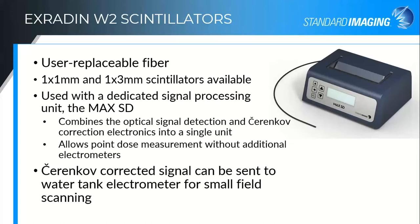The one by three also gives you three times the signal. So if you're scanning in slightly larger small fields where you may not need one millimeter length resolution on the scintillator, it gives you three times the signal-to-noise — a little bit nicer for some of the slightly larger fields.